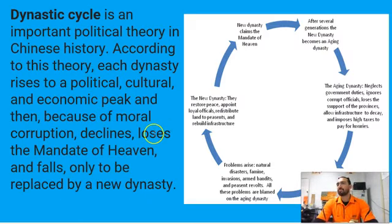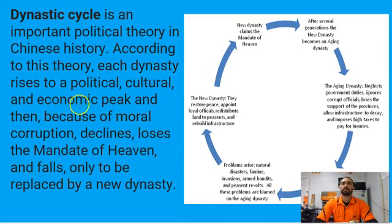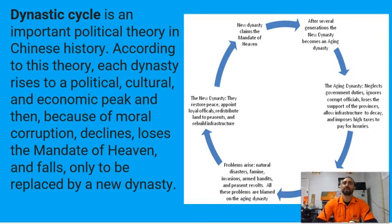We will not be memorizing all the Chinese dynasties. What's more important than knowing the list of dynasties is understanding the rise and fall of these dynasties. The rise and fall of these dynasties is called the dynastic cycle, and it's based on the mandate of heaven. According to this theory, each dynasty rises to a political, cultural, and economic peak, and then they become corrupt. They decline, and eventually they lose the mandate of heaven, and they're replaced by a new dynasty that has the mandate of heaven.